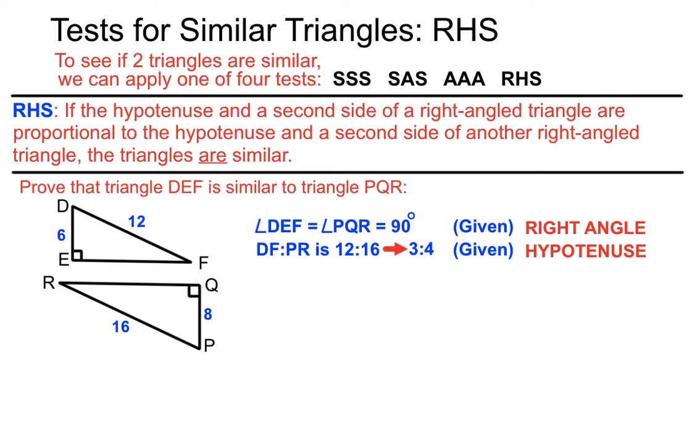So we've done a right angle, an R statement. We've done a hypotenuse statement. So now we're just looking for another side statement to make between the two triangles and we'll see if this has got the same ratio as the hypotenuse statement here. So the other side that we've got that's not the hypotenuse, we've got DE which is 6 and PQ which is 8. If we write that ratio down 6 to 8 and we simplify it, that will simplify down to 3 to 4 as well.